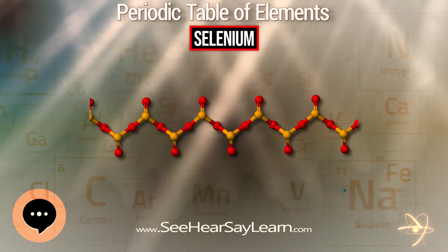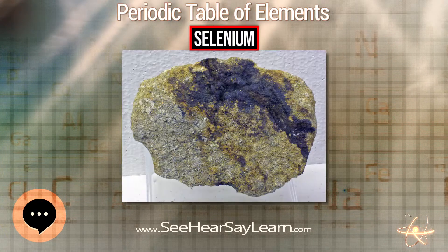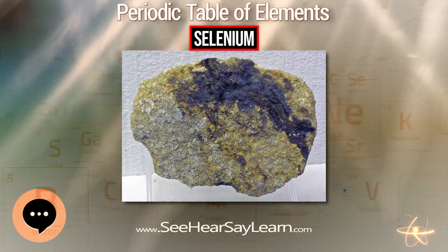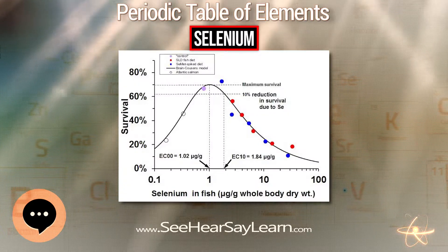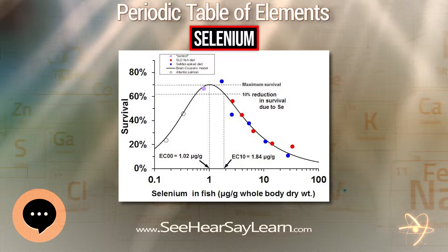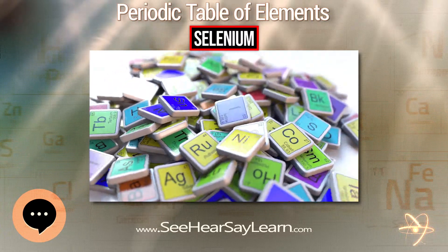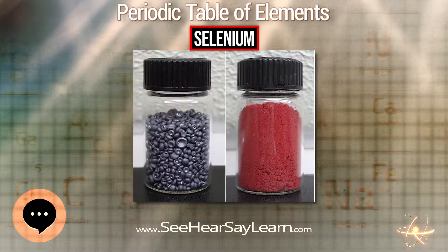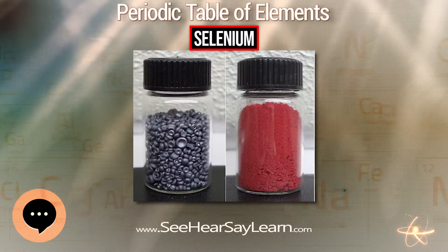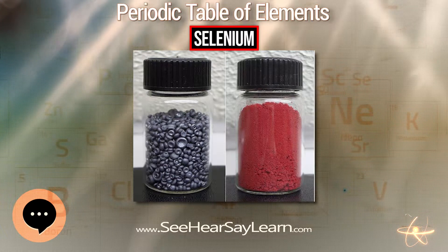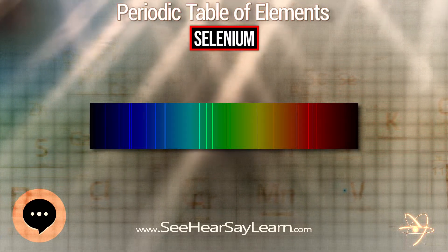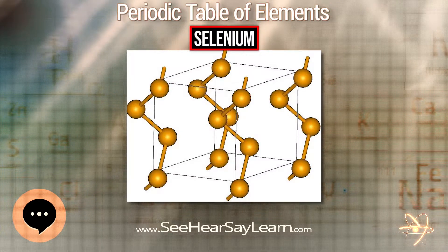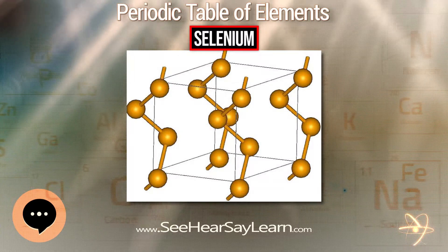Zinc selenide was the first material for blue LEDs, but gallium nitride dominates that market. Cadmium selenide was an important component in quantum dots. Sheets of amorphous selenium convert X-ray images to patterns of charge in xeroradiography and in solid-state flat panel X-ray cameras. Ionized selenium is one of the active mediums used in X-ray lasers. Selenium is a catalyst in some chemical reactions, but is not widely used because of issues with toxicity.